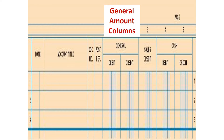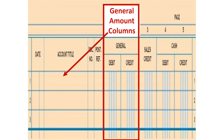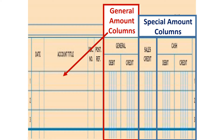The first thing we have is our general amount columns. If we put an amount in the general amount column, we have to put a title in the account title. If we don't use the general debit or general credit column, then we don't have to use the account title. Next, you'll see our special amount columns — sales credit, cash debit, and cash credit — which makes it a lot easier to record all of our transactions.